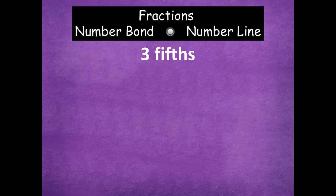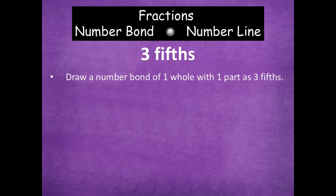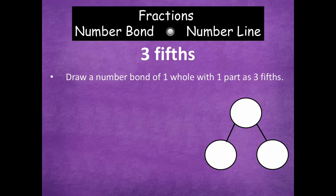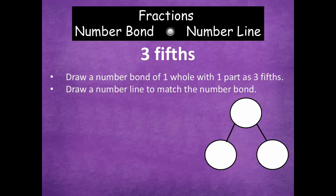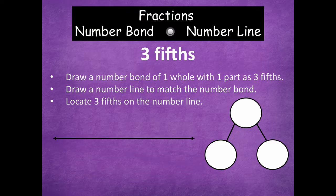Now you're going to need your dry erase board. We're going to model three-fifths. You're going to draw a number bond of one whole with one part as three-fifths and complete the number bond. Then draw a number line to match the number bond and locate three-fifths on the number line — the same process we just did with two-thirds. Go ahead and pause the video, complete the number bond, draw your number line, and locate three-fifths. Click play when you're ready.